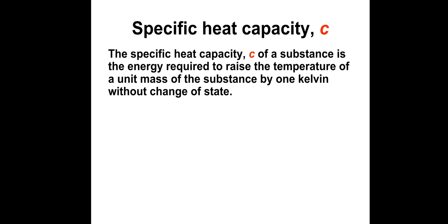Specific heat capacity - this should be a recap from year 10. Our definition: the specific heat capacity c of a substance is the energy required to raise the temperature of a unit mass of the substance by 1 Kelvin or 1 degree Celsius without a change of state. If you want to write that down, please do. Remember to pause at any point.